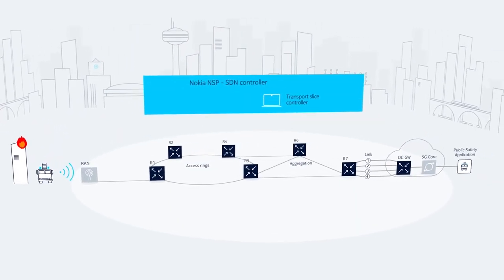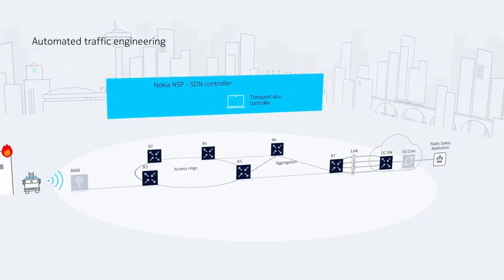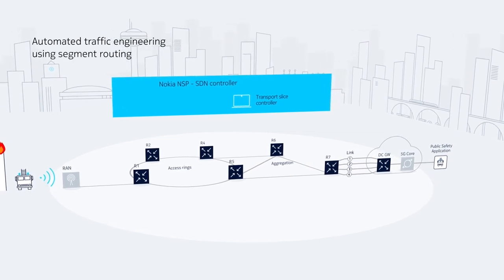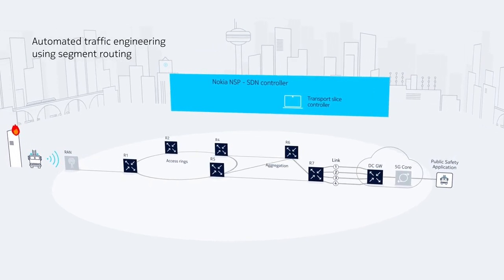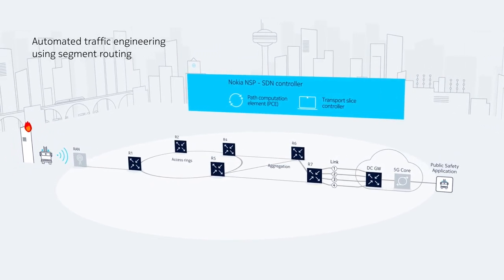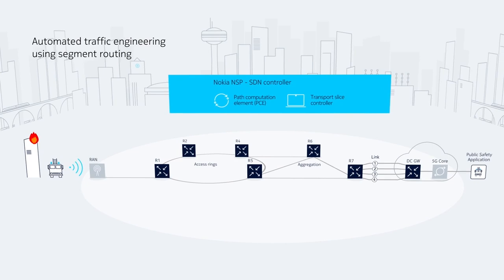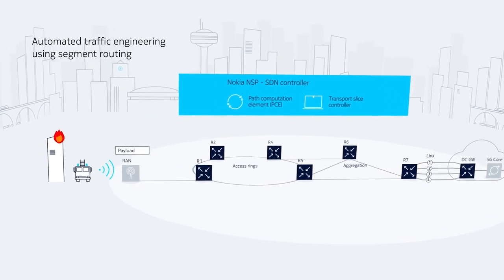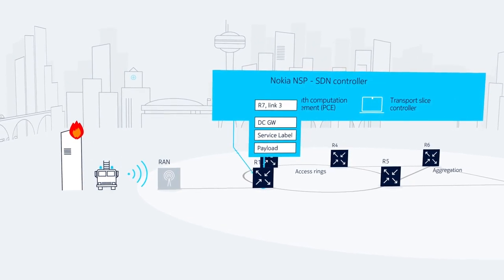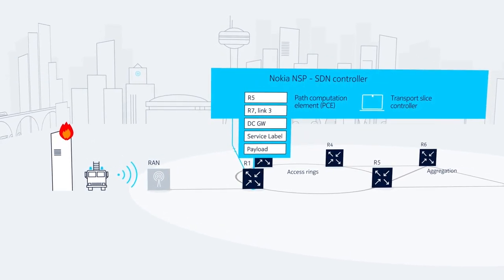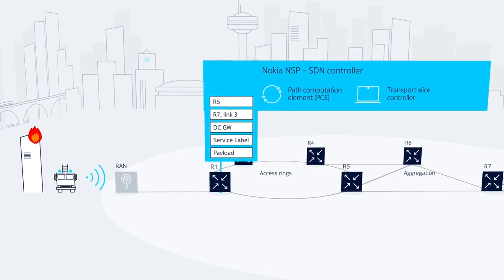An SDN function that will be critical for 5G is automated traffic engineering. In this example, we're using segment routing, but other techniques such as RSVP-TE are available. Using its path computation element function, the NSP computes the best path across the backhaul network for each of the customer's 5 applications based on their requirements. For each of these paths, the PCE downloads a service label and other routing labels to the ingress router.